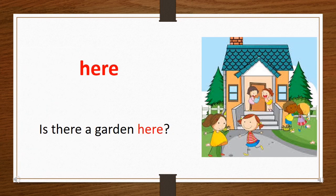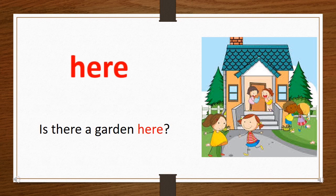The word is 'here.' When we want to show that someone or something has arrived or just started, or when we want to show that someone or something is near to us, we use 'here.' For example: Is there a garden here?